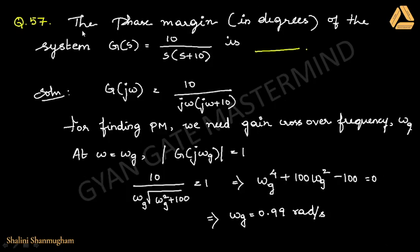Coming to the 57th question: the phase margin in degrees of the system G(s) = 10 / [s(s + 10)]. They have asked to find the phase margin. For finding the phase margin, we need to know the gain crossover frequency, so for the given open loop transfer function I am finding the magnitude.